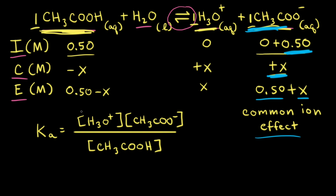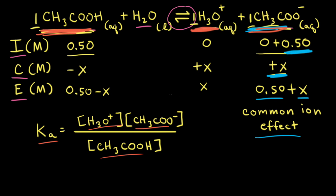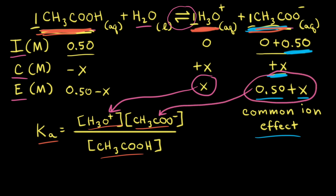The next step is to write the Ka expression for acetic acid. Ka equals the concentration of hydronium ions times the concentration of acetate anions, divided by the concentration of acetic acid, with water excluded from the expression. The Ka value for acetic acid at 25°C is 1.8 × 10⁻⁵. Plugging in the equilibrium concentrations: hydronium ion is x, acetate anion is 0.50 + x, and acetic acid is 0.50 − x.